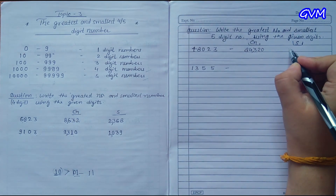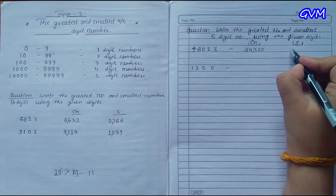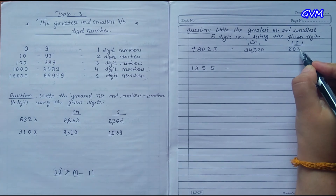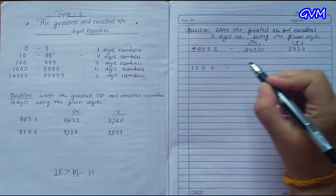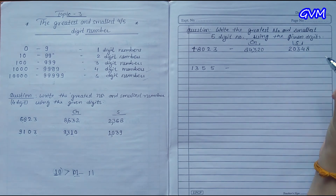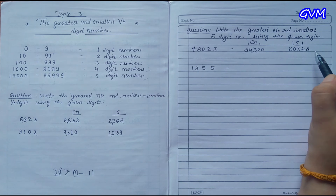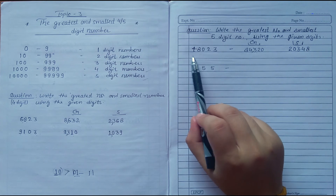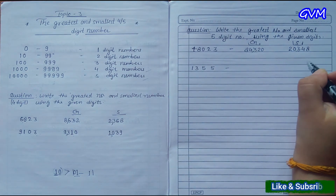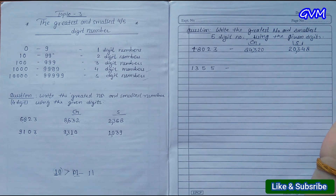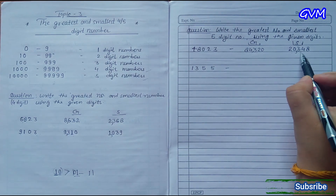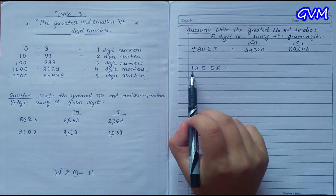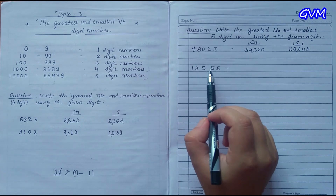For the smallest number, arrange them in ascending order, but remember we do not put 0 in the first place. So write the second smallest number, 2, first. Then you can put 0, then 3, then 4, then 8. Put a comma after three digits — this gives us 20,348 as the smallest number.